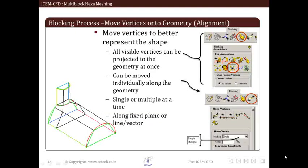Next, we move position of vertices either to improve quality of mesh or for capturing geometrical shape in a better way. All vertices can be projected to geometry at once by using snap vertices option in association operation. Vertices can be moved individually along the geometry entity. We can either move single vertex or multiple vertices at desired location in space. Various vertex movement operations will be discussed in detail in coming slides.